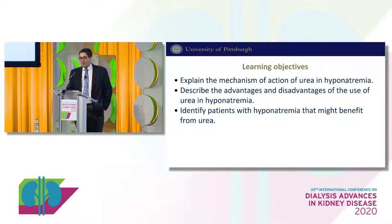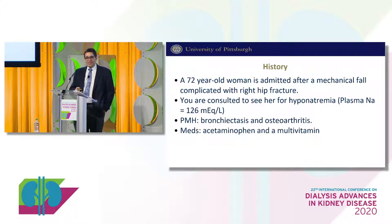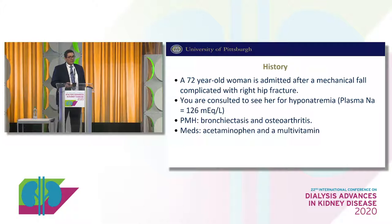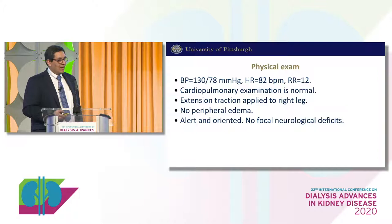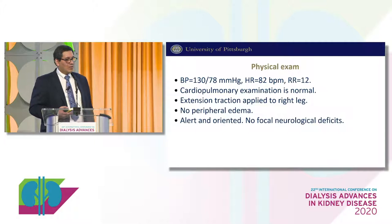I'm going to start with a case. This is a 72-year-old woman that I saw in the hospital. She was admitted after a fall and developed a fracture of her right hip, and you were consulted to see her for hyponatremia. Her plasma sodium was 126. Her medical history was significant for bronchiectasis and osteoarthritis, and she doesn't take a lot of medications, only acetaminophen and a multivitamin. Her blood pressure and heart rate are within normal limits. Her cardiopulmonary exam is normal. She has a device allowing traction of her right leg. No edema on exam, and neurologically she appears intact, alert and oriented, with no deficits.